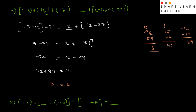Next step, simplify. Open bracket: plus into minus is minus, minus is minus 89. Next step. So x equals to minus 92. Then sign change: plus 89. So minus 92 plus 89 equals to x.